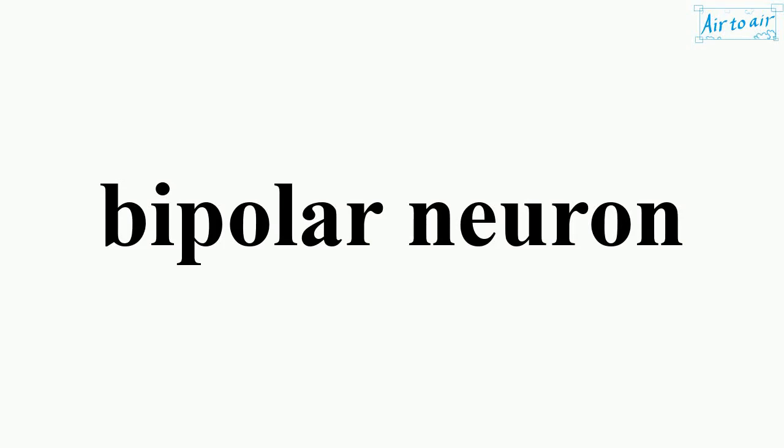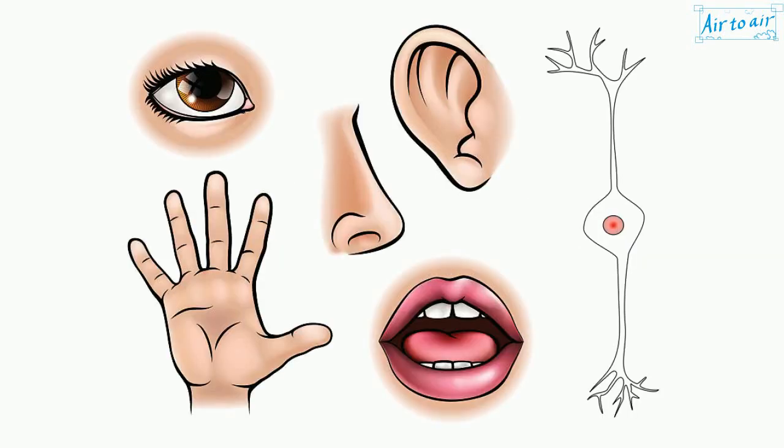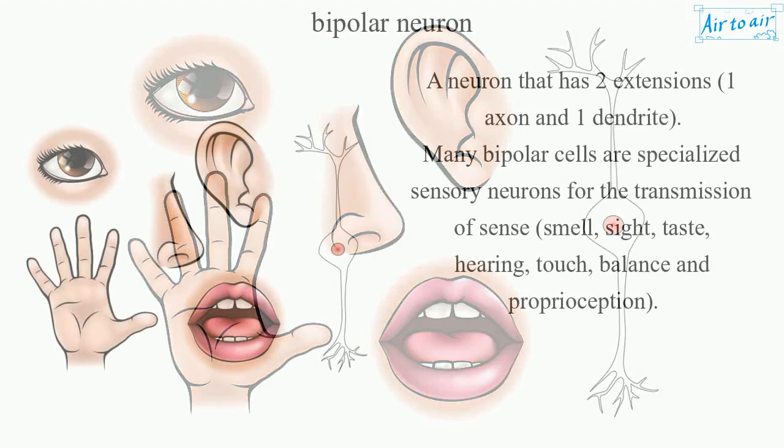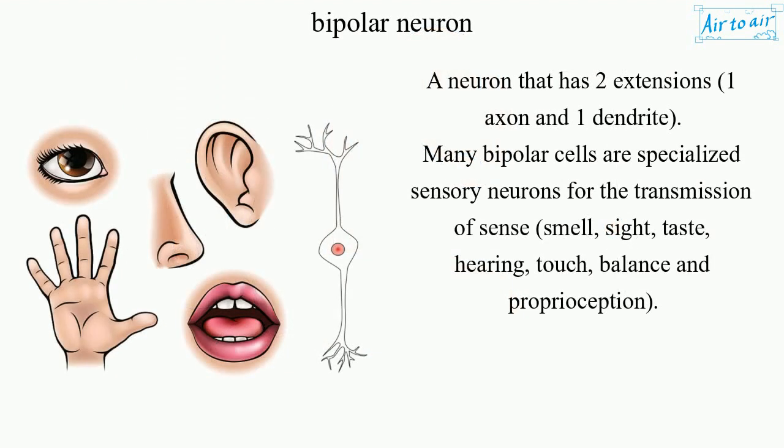Bipolar Neuron. A neuron that has two extensions, one axon and one dendrite.